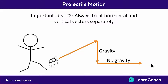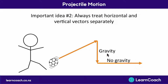Combining this with the first idea, we can see that there are only forces acting in the vertical, because that's the only direction gravity ever acts. Any horizontal movement has no forces acting on it because there's no gravity, and remember gravity is the only force acting.